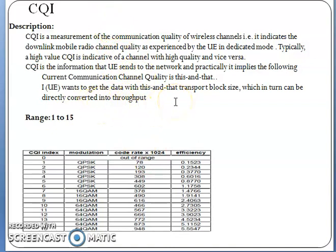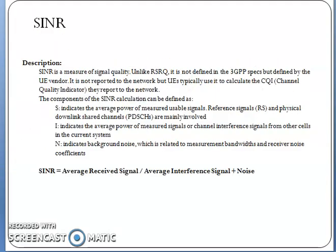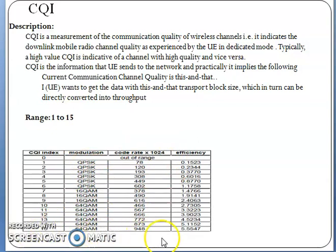The number of RBs is allocated dynamically by the eNodeB. For 5 MHz bandwidth there are 25 RBs, allocated to users at each TTI (Transmission Time Interval). To summarize CQI: it is the Channel Quality Indicator running from 1 to 15 — 1 to 6 gives QPSK, 7 to 9 gives 16QAM, 10 to 15 gives 64QAM. At CQI 15 you get 64QAM modulation with a code rate of 948 and efficiency of 5.55, giving the best throughputs.